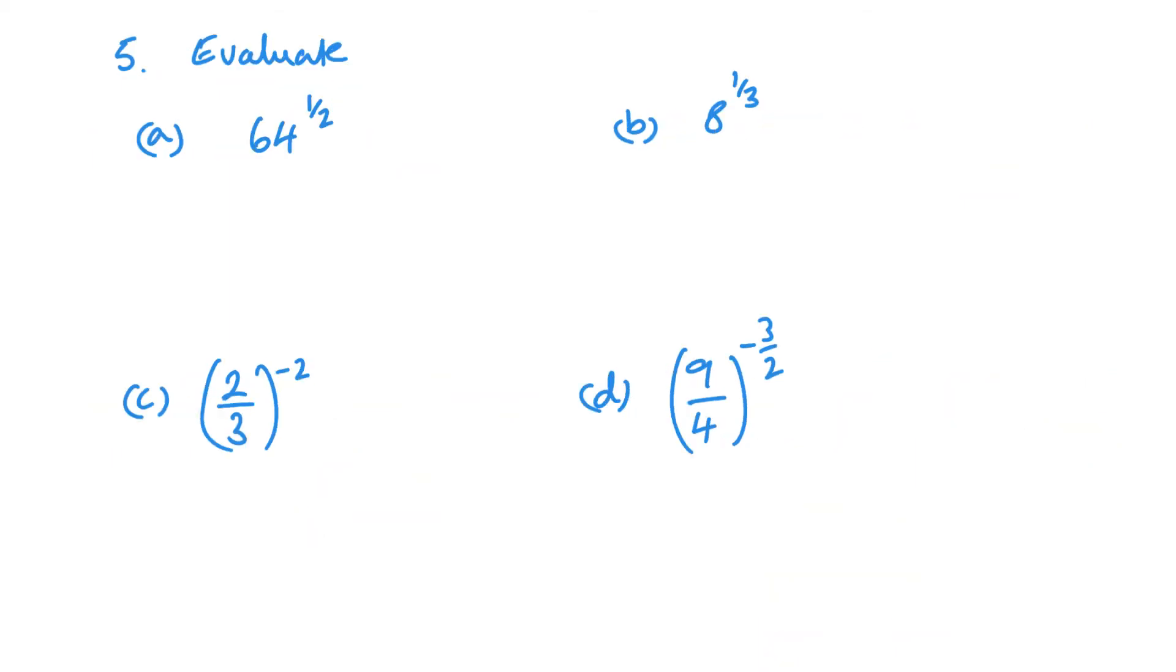So if I have 64 to the power of half, what that means is I'm looking at the square root of 64. Square root of 64 is 8, and really is plus or minus 8. 8 to the power of 3rd, we've done this one. Cube root of 8, so it's 2.